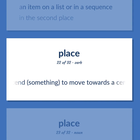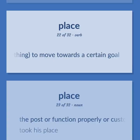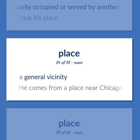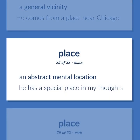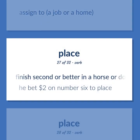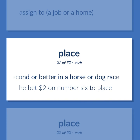Intend; to move towards a certain goal. The post or function properly or customarily occupied or served by another. Example: Took his place. A general vicinity. Example: He comes from a place near Chicago. An abstract mental location. Example: He has a special place in my thoughts. Assign to a job or a home. Finish second or better in a horse or dog race. Example: He bet $2 on number 6 to place.